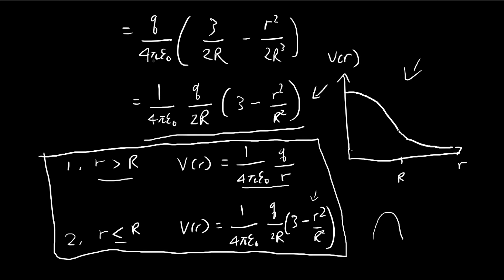One more point: in this problem we used the electric field to find the potential. Later in the book, you'll find a different problem that tells you to find the potential using the charge density instead. So there are actually two different methods to solve this problem. That's all for this video — see you next time.